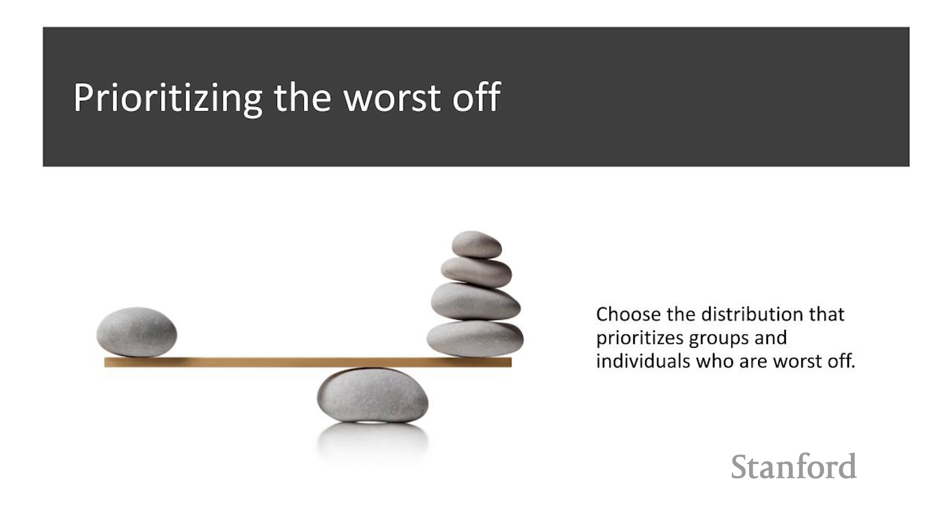This course of action would be supported by a principle that focused on prioritizing those who are the worst off. That is, choosing distributions that ensure that those who are the worst off are served first. There are different versions of this principle that fit under different philosophical frameworks, such as prioritarianism, which mandates that we give priority to the well-being of individuals who are worst off, or Rawls' difference principle, according to which any inequality in the distribution of social goods should be such that it benefits those who are worst off.